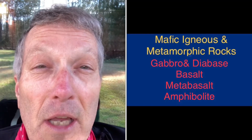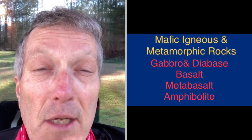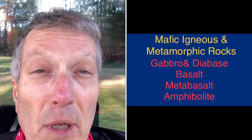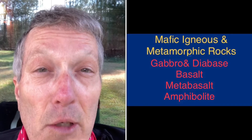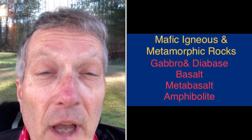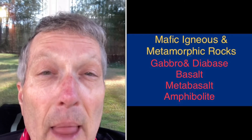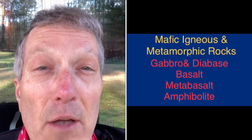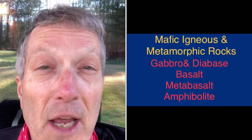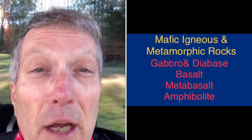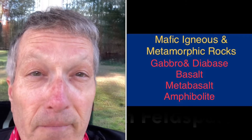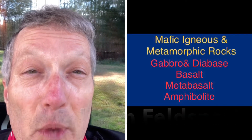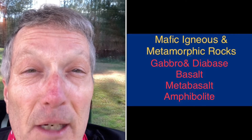Mafic rocks — the ones we're going to talk about today — like basalt, gabbro, diabase, and their metamorphic equivalents, metabasalt and amphibolite, have a little bit of quartz, so that means a little bit of silicon, and a lot of iron, magnesium, and calcium. Iron, magnesium, and calcium are mafic elements, and they make mafic minerals like hornblende, pyroxene, and olivine. So I hope that helps make it a little more clear.